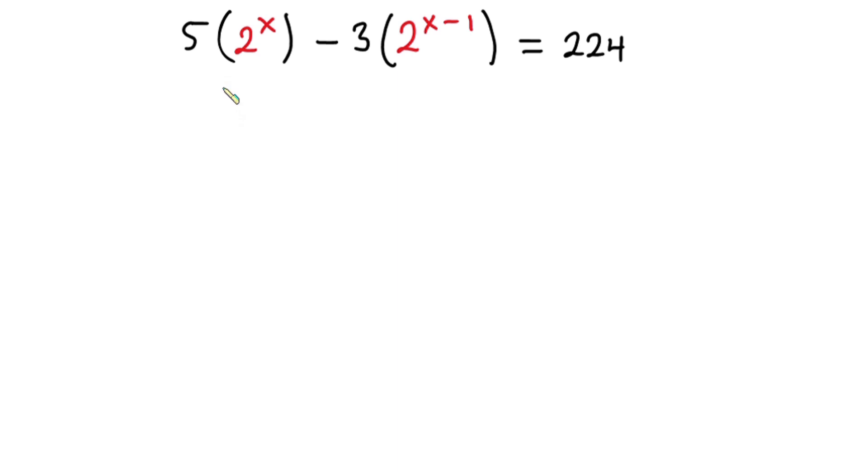Hello everyone, in this video we have this interesting problem: 5 times 2 to the power x minus 3 times 2 to the power x minus 1, and this is equal to 2 to the 4th.